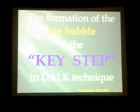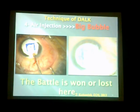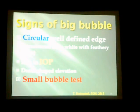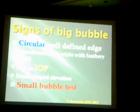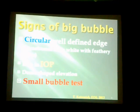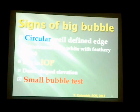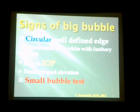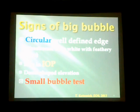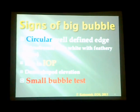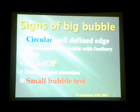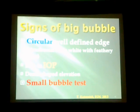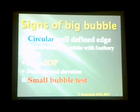Step number four is big bubble formation — the key step in the DALK technique. The battle is won or lost at this step. The signs of forming the big bubble are very important: I have to see a circular, well-defined white color, contrary to intrastromal air which has feathery edges. The intraocular pressure has to be high after injection, and we use what's called the small bubble test.